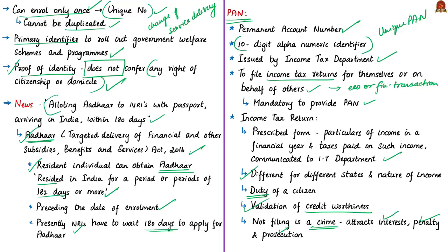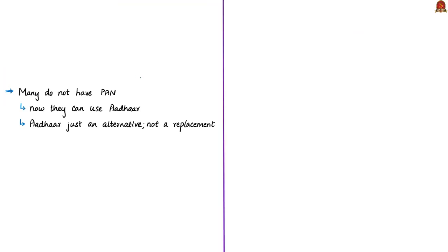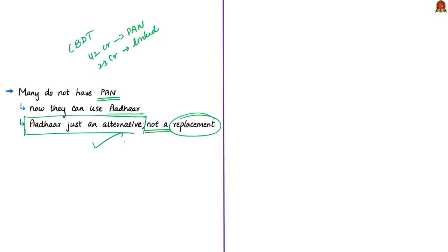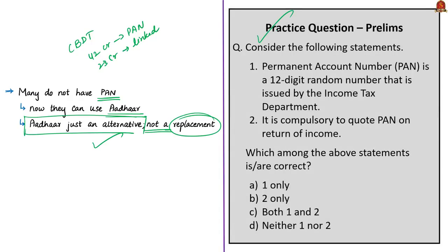Failing to file the return is a crime, as it means the person is hiding income from the government. Non-payment of tax attracts interest, penalties, and prosecution — the prosecution can lead to rigorous imprisonment for about three months to two years. To solve the problem of many people not having PAN, the Finance Minister announced the interchangeable use of PAN and Aadhaar — even when a person does not have PAN, they can file the return of income using the Aadhaar number. According to data of the Central Board of Direct Taxes, 42 crore PAN cards have been issued, out of which only 23 crore have been linked with Aadhaar. The intent is not to replace PAN with Aadhaar as the primary identity proof — Aadhaar is just an alternative.